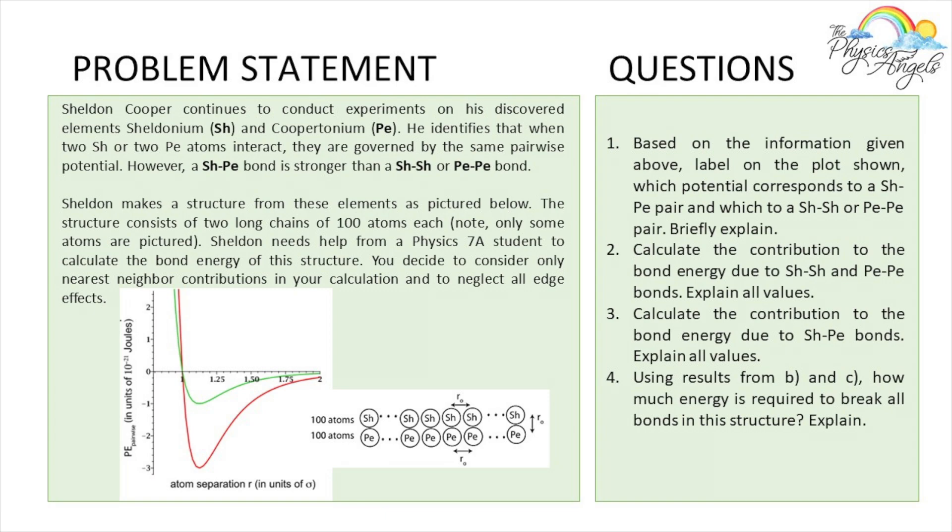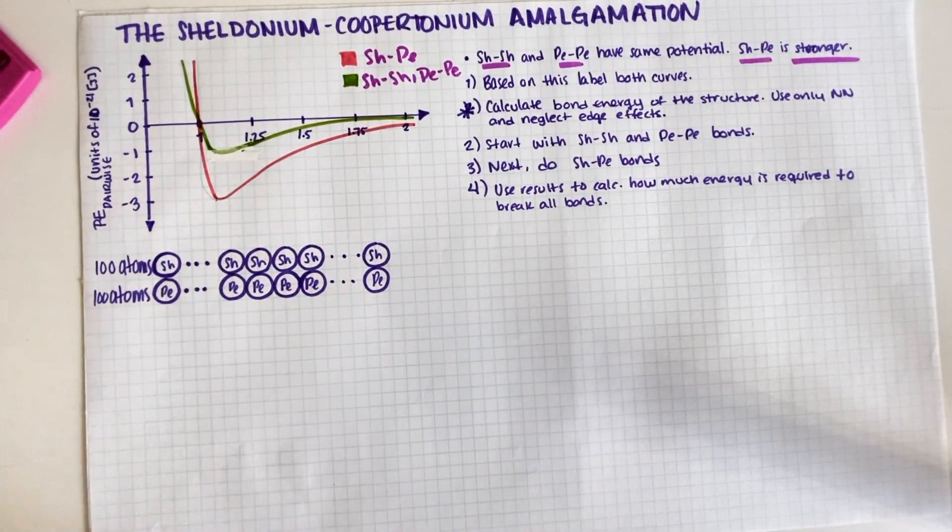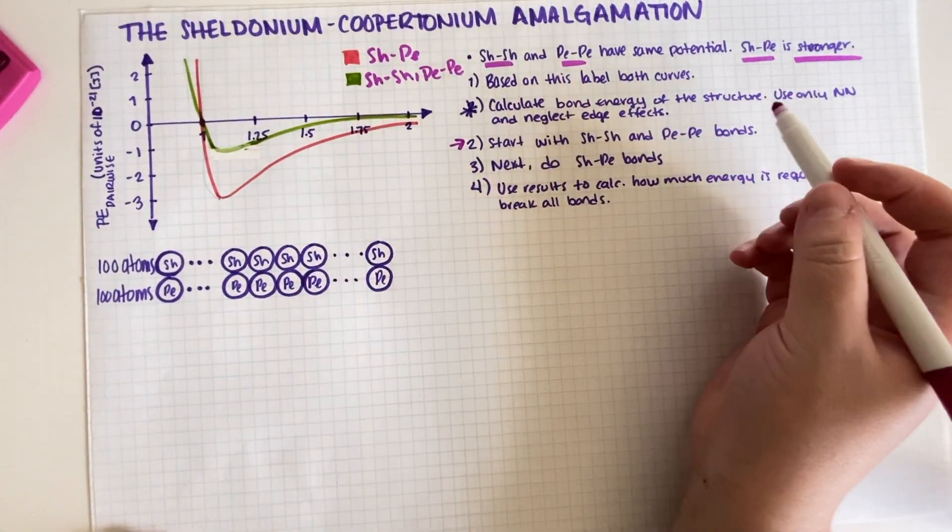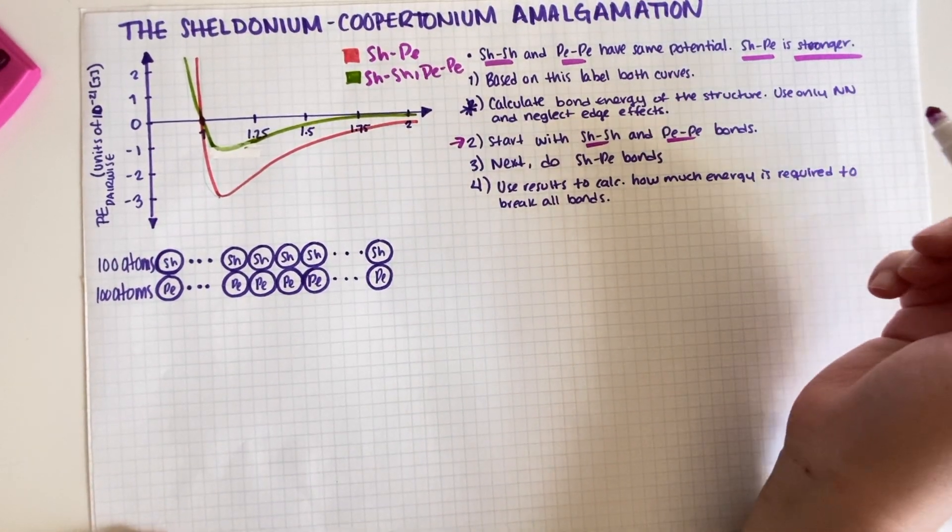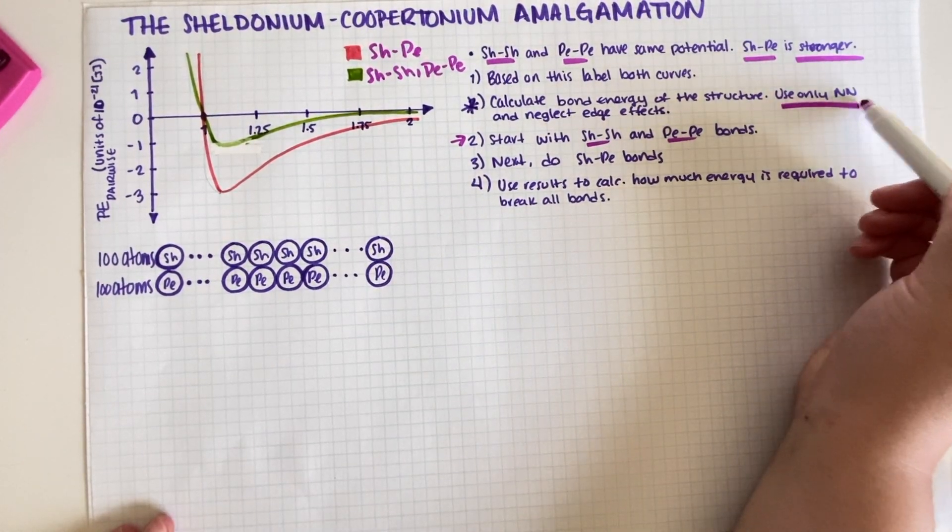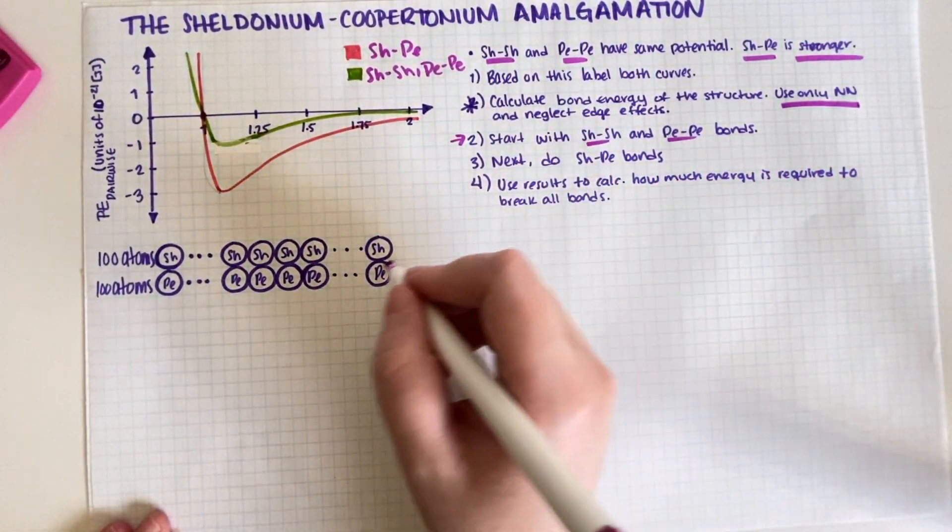You decide to consider only nearest neighbor contributions in your calculation and to neglect all edge effects. Calculate the contribution to the bond energy due to Sheldonium-Sheldonium. Okay, so we have to do Sheldonium-Sheldonium and Coopertonium-Coopertonium first. Then for part C we have to do the contribution for both of them, and then on part D we basically have to add up both numbers to get a total number.